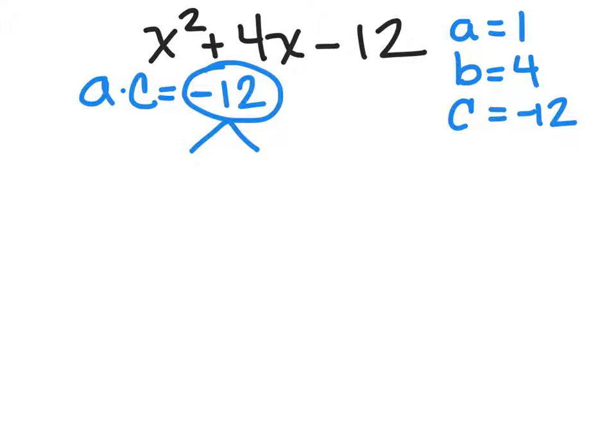So we can start working with, well, I have 6 times 2, 3 times 4, etc. But again, don't forget, the result should be, when you combine them, positive 4.